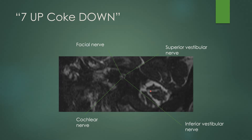For the nerves in the internal auditory canal, the mnemonic is 7-up-coke-down. On the anterior aspect of the IAC on a sagittal view, you have the facial nerve superiorly and the cochlear nerve inferiorly. Posteriorly — just look for the cerebellum to orient yourself — you have the superior and inferior vestibular nerves. This is something that is frequently tested for radiology residents.